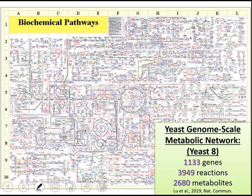The recent yeast-8 metabolic network includes about 4,000 reactions and about 2,500 metabolites — a very complex network indeed. Some reactions are catabolic and some are anabolic.